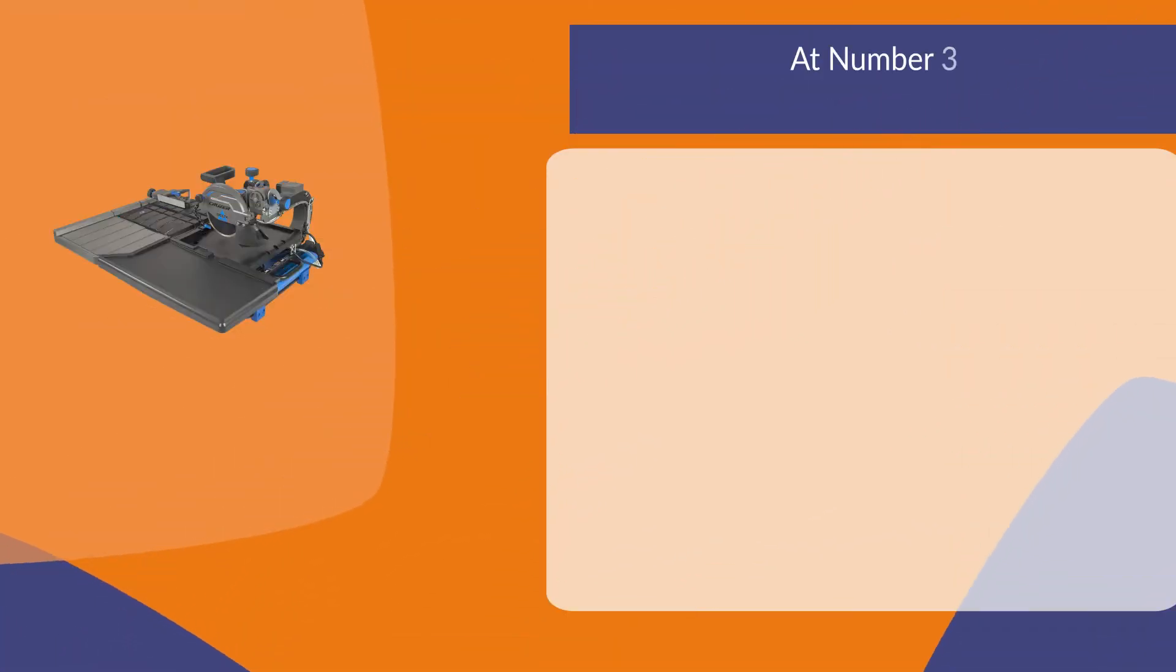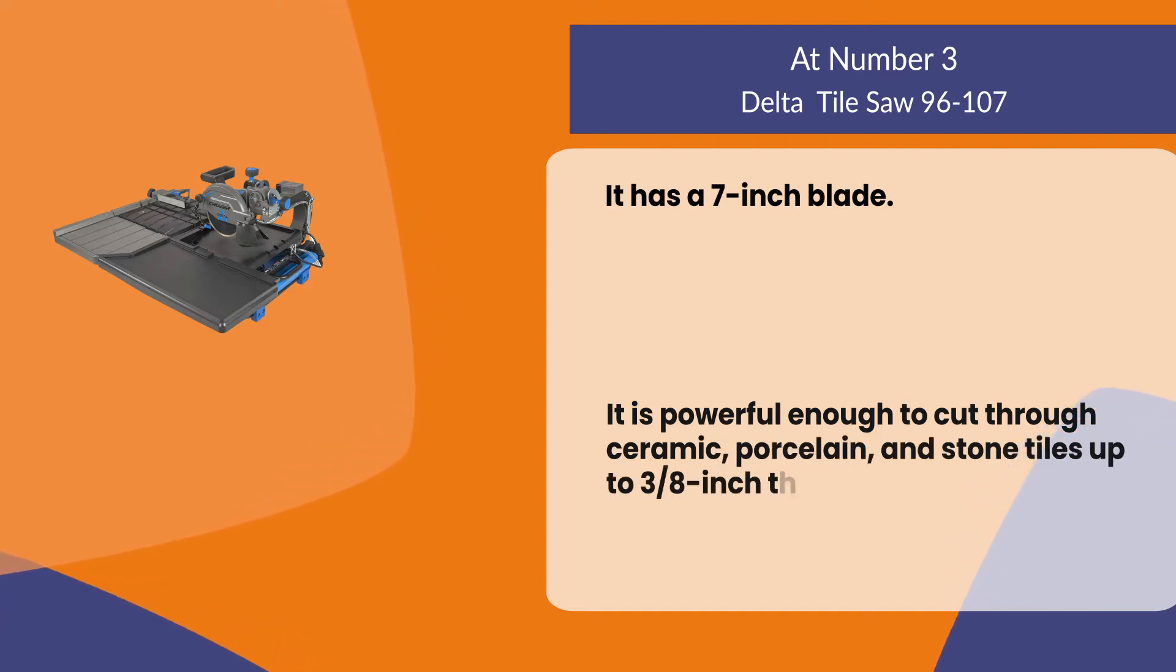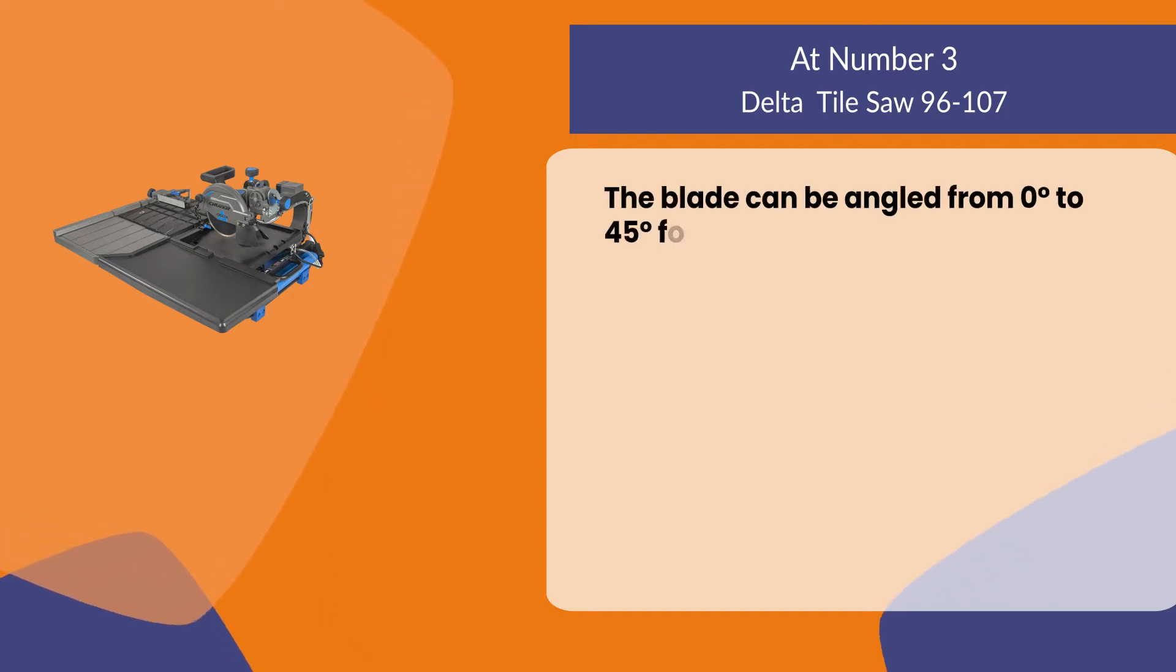At number three, Delta Tile Saw. It has a seven-inch blade. It is powerful enough to cut through ceramic, porcelain, and stone tiles up to 3/8 inch thick. The blade can be angled from zero degrees to 45 degrees for cutting different materials.